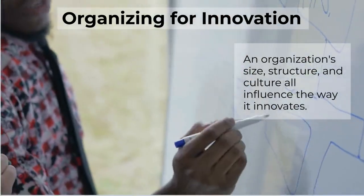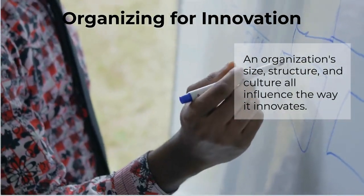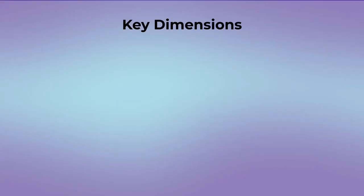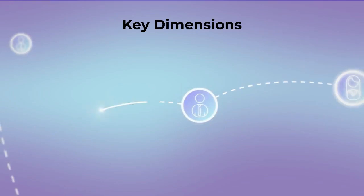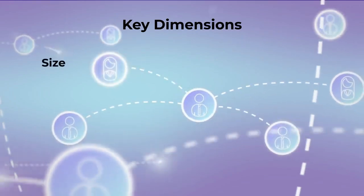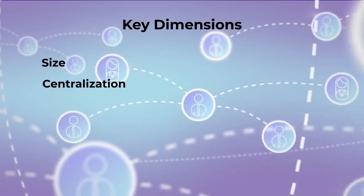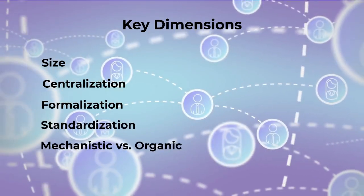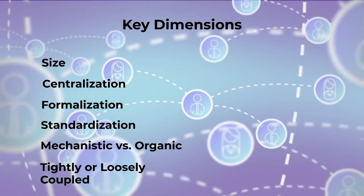Welcome back to Innovation Strategy. In today's video we're going to talk about organizing for innovation — how the structure and the culture of the firm shapes the way it innovates. An organization's size, structure, and culture all influence the way it innovates. The key dimensions of structure we'll discuss include size, centralization, formalization, standardization, mechanistic versus organic, and tightly or loosely coupled.